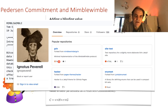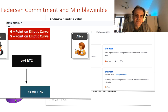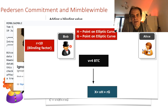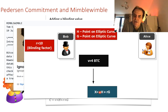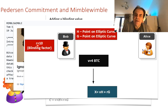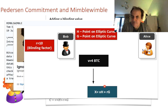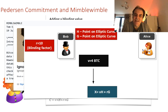Here's how MimbleWimble works: we have a blinding factor r = 10 and two points. The value is 4 bitcoins. If we put 4 bitcoins directly on the blockchain it would be identifiable, since if Bob already spent 4 bitcoins elsewhere it would appear as the same value. Instead, we take blinding factor r = 10, add it as another point, and add them together. Without knowing the blinding factor we can't tell what v is — Bob keeps that in his wallet. When Alice wants to verify the value, Bob sends her the blinding factor and she can determine it was 4 bitcoins.